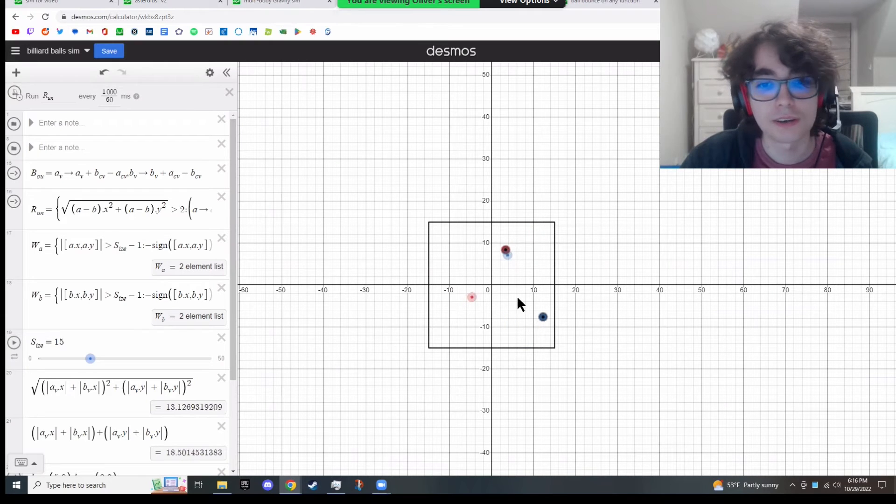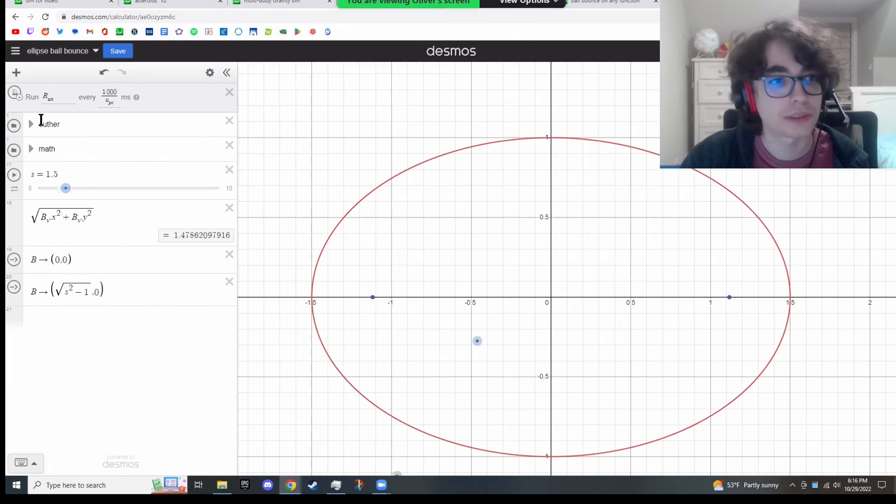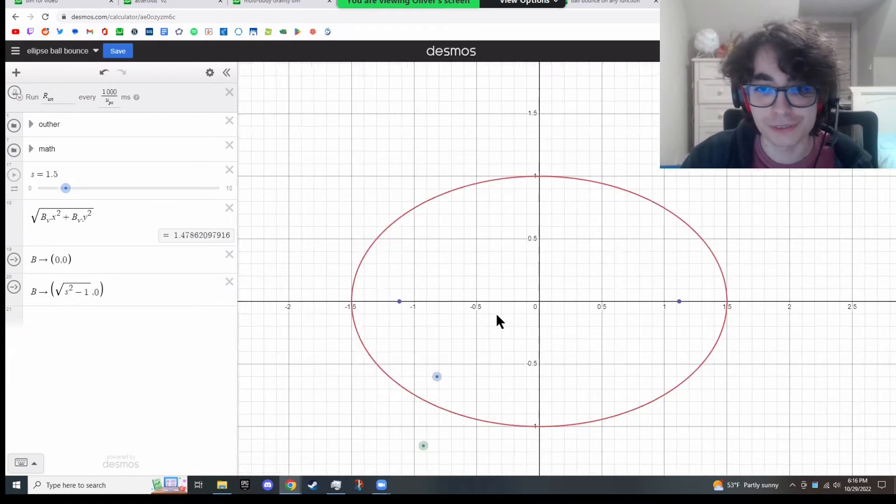After collisions of two balls, I experimented with collisions of a billiard ball in an ellipse. A billiard ball bouncing on an ellipse has some very interesting properties.